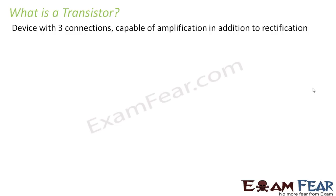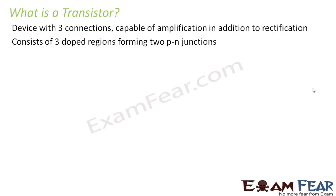A transistor is a device with three connections which is capable of amplification in addition to rectification. In the case of diodes, it was a two-terminal device, but in the case of a transistor it has three terminals. So the transistor can perform rectification like a diode, but in addition it is also capable of amplification. It consists of three doped regions forming two PN junctions.